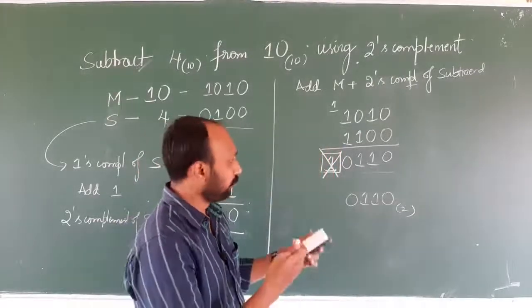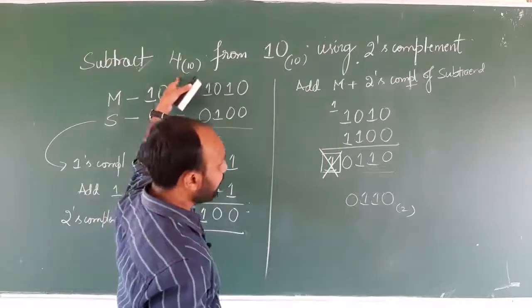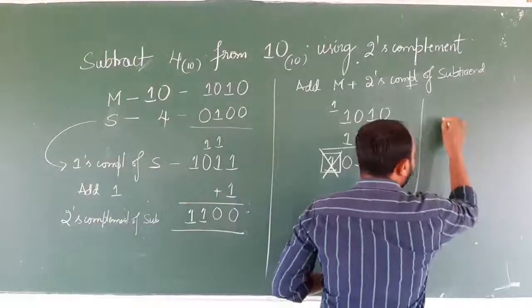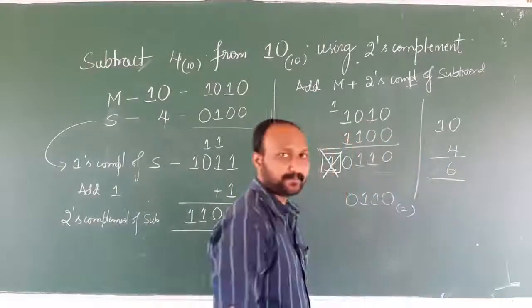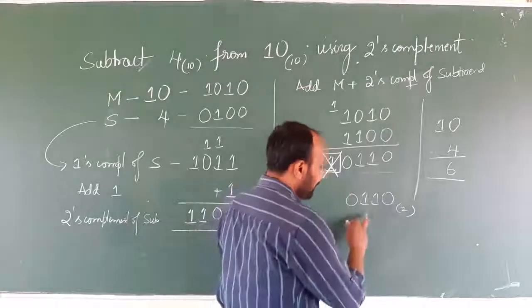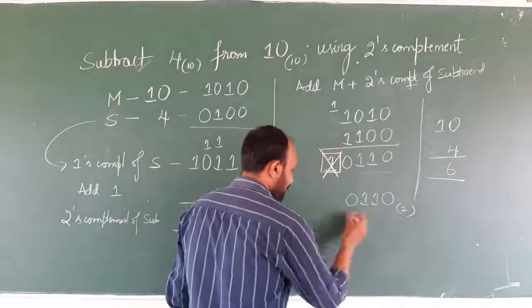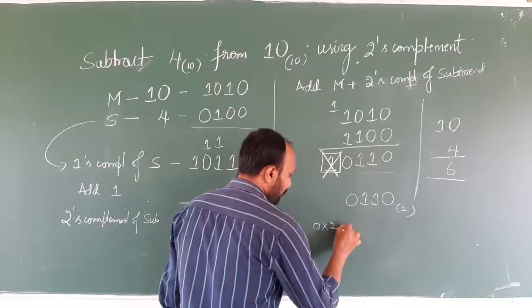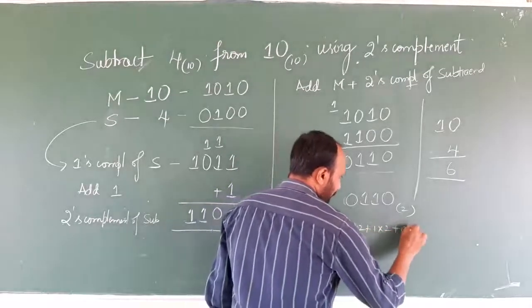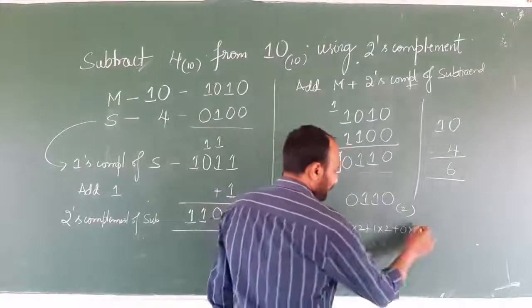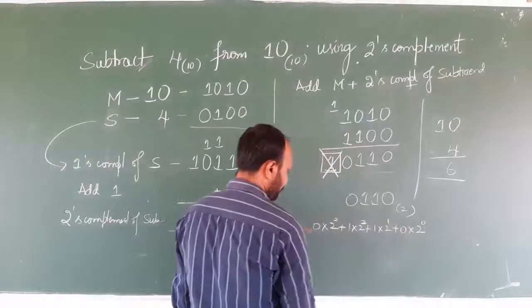How to check whether the answer is correct or not? We subtracted 4 from 10, so the answer must be 6. Let us convert this binary to decimal: 0 × 2⁰ + 1 × 2¹ + 1 × 2² + 0 × 2³, raising the powers 0, 1, 2, 3.